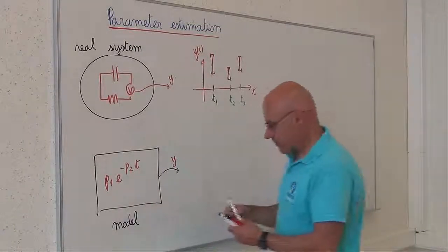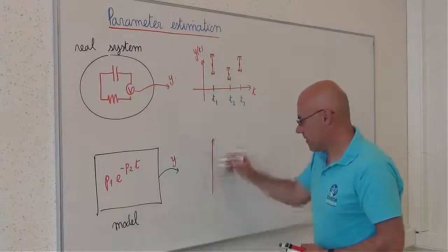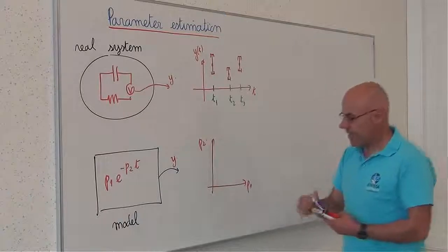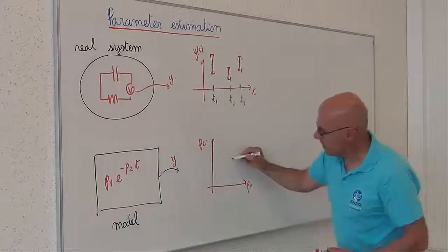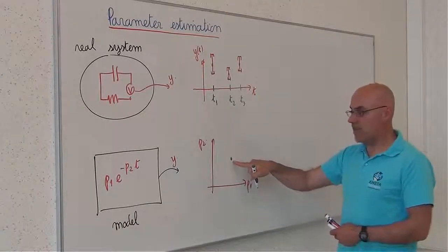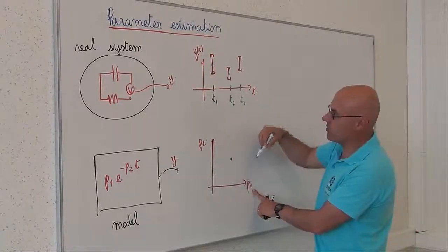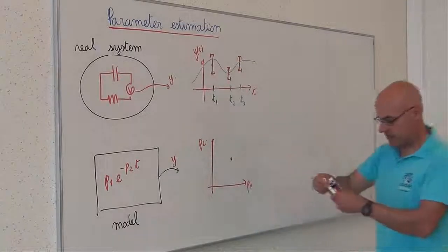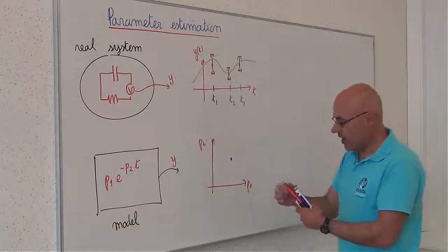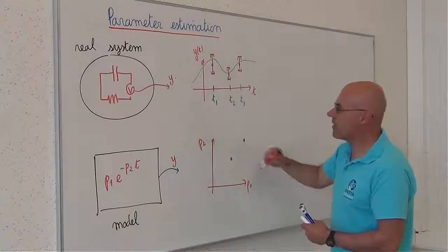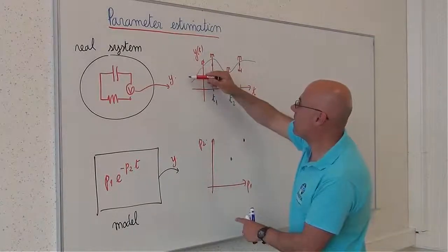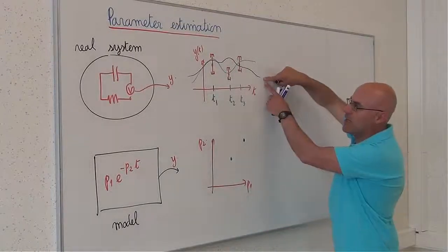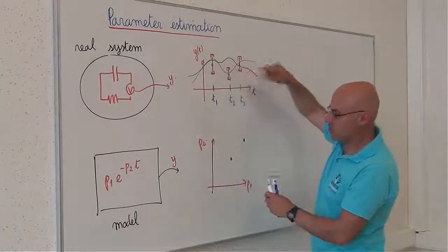In my model, I have here P1 and P2. And if I take here a feasible parameter vector, then the corresponding trajectory will cross all my points. If I take an unfeasible trajectory, then at least one of the bars is not crossed.